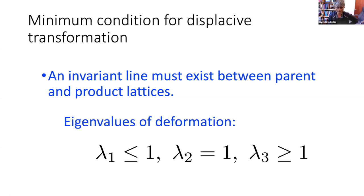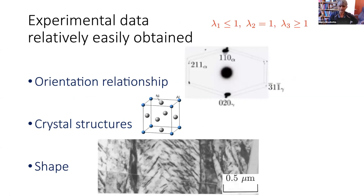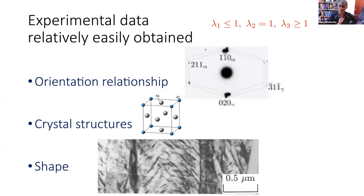This condition comes from the requirement that the interface can glide without non-conservative transfer of atoms. How can we decide whether a carbide can form by this mechanism? We calculate the eigenvalues and eigenvectors from experimentally measured orientation relationships — published widely in the literature — combined with knowledge of the crystal structures of the parent and product phases, and some indication of the shape of the precipitate.